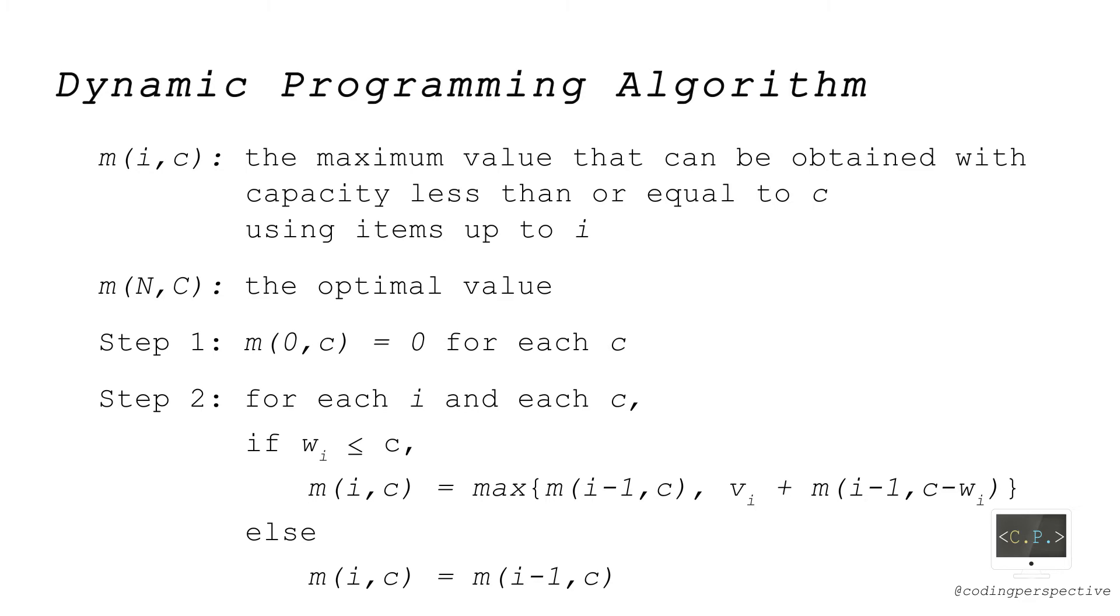Then in the second step, using a nested loop, we iteratively update m(i,c) as follows. To compute m(i,c), we have only two options for item i.